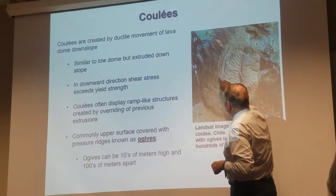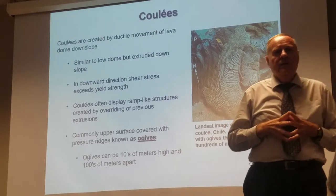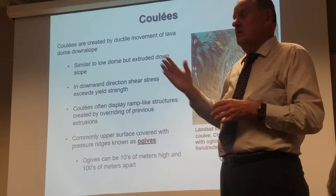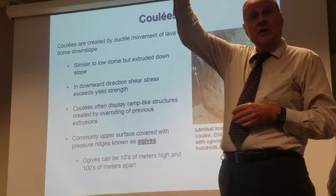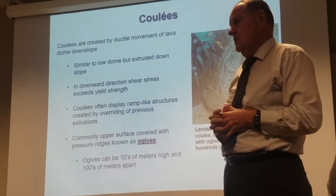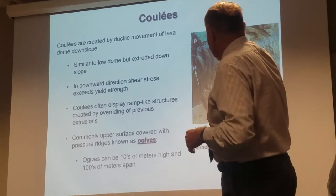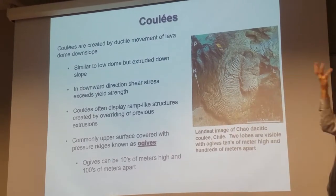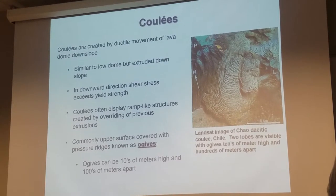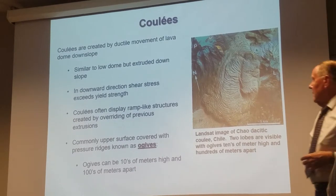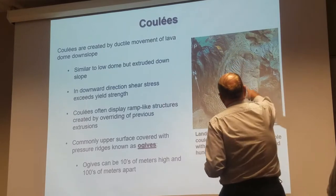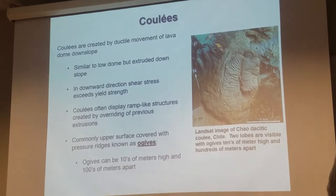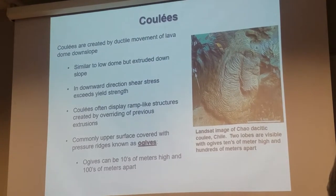In addition to ramp structures, there are pressure ridges like we saw in pahoehoe, but on coulees these are huge — called ogives. Some of them can be as much as 100 meters high and spaced several hundred meters apart. You can see that at the scale shown — that's five kilometers — so these are very large structures. The two lobes visible here represent two different eruptive events, or two different dome-building episodes.